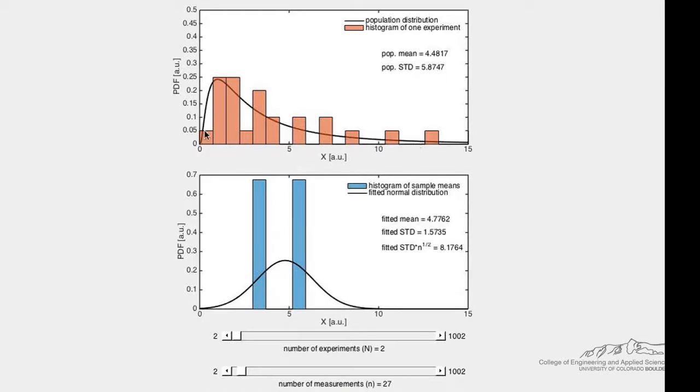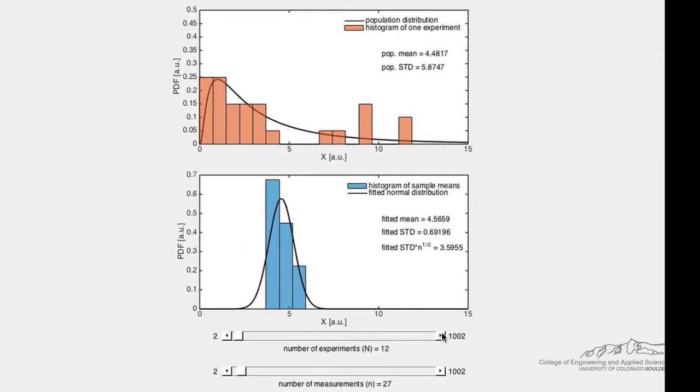Now let's take the average of these 27 measurements from this experiment and plot the mean in the lower plot. If we increase the number of experiments but keep the number of measurements in each experiment the same,